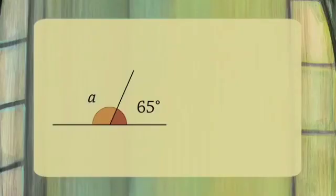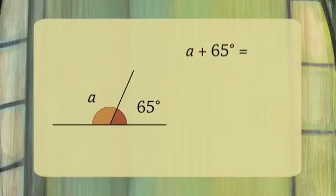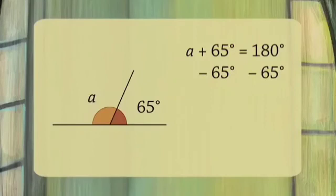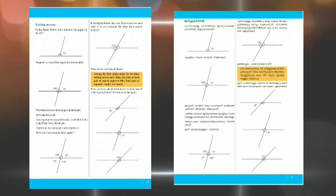Let's look at the first problem. In the figure, angle A is 65 degrees. Angle A plus 65 degrees equals 180 degrees. So the measurement will be 115 degrees.